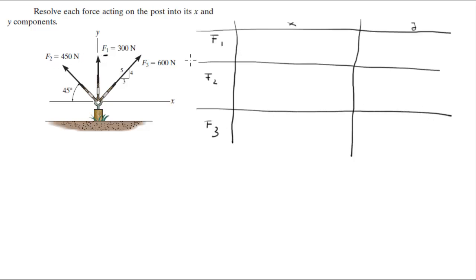So let's start with F1. F1 is very simple, it's not going left or right therefore the X component is 0 and the Y component is 300 since it's going straight up in the positive Y direction.